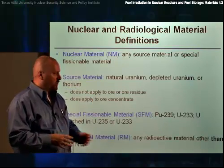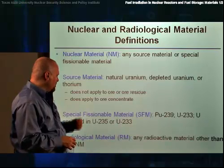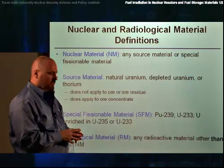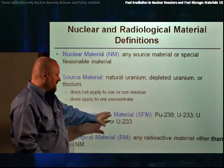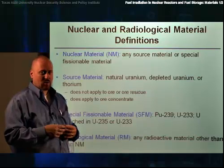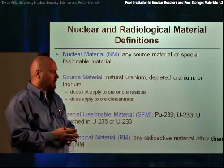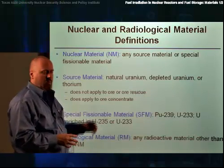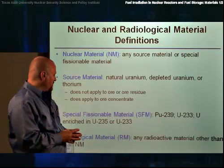Special fissional material is plutonium-239, U-233, uranium enriched in U-235, or U-233. Special fissional material is the material that we would actually use for fission in, for instance, a reactor, or that could be used in the manufacture of a nuclear explosive device.